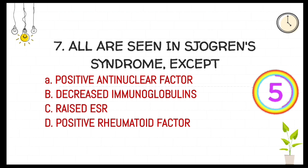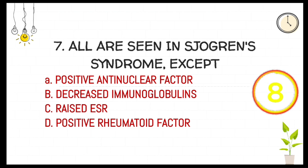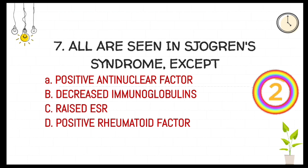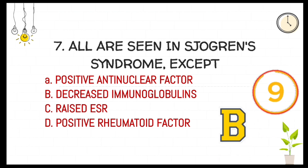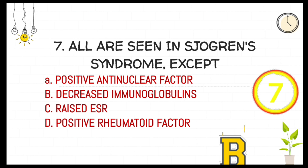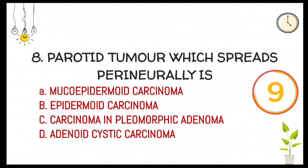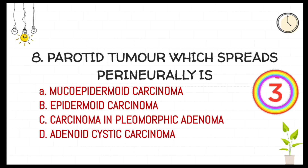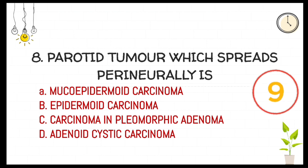Sjogren's syndrome is one of the important concepts which you need to know — don't miss it. The answer is B — decreased immunoglobulins.